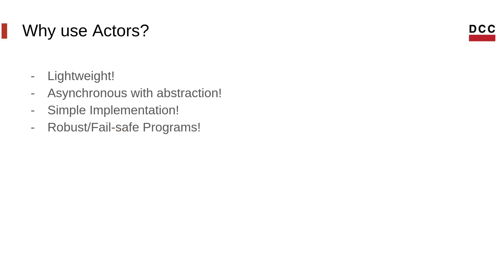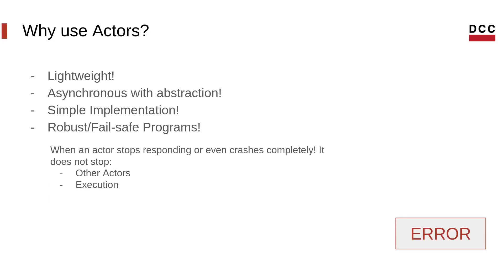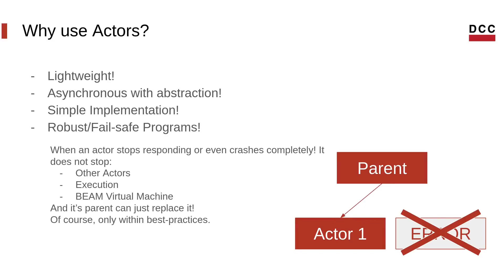The actors model is also robust and fail-safe. When an actor stops responding or even crashes completely, it does not stop other actors, the execution of our program, or the BEAM virtual machine where Elixir runs. Its parent can just replace it at any moment — of course only within best practices, as bad code can still create bad results. Replacing actors is cheap, so replacing one that broke down is not a problem. This creates one of the paradigms of Elixir: 'let it crash.' This paradigm states that it is better to crash certain actors and replace them instead of dealing with complex edge cases that result in poor performance.